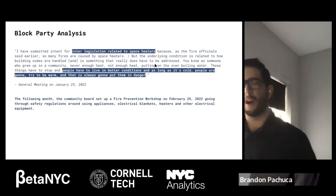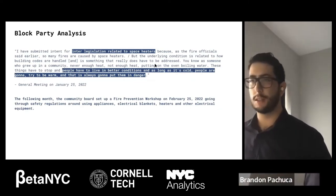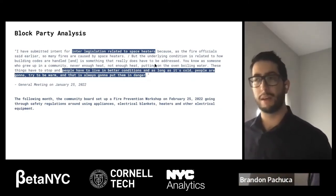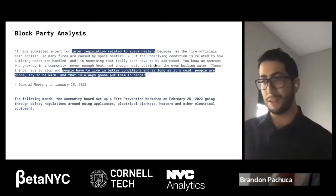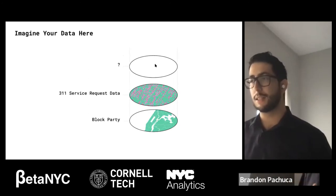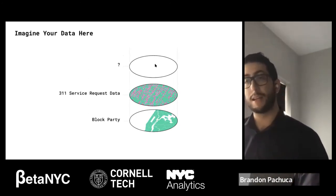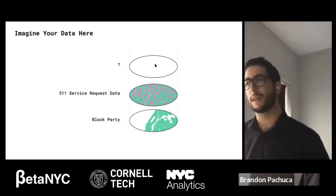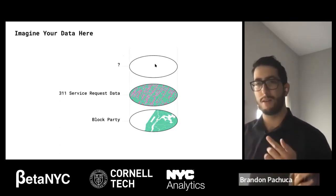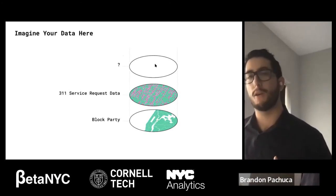The following month, the community board set up a fire prevention workshop on February 22, 2022, going through safety regulations around using appliances, electrical blankets, heaters, and other electrical equipment. This is an example of using 311 service requests to act as a signal to dig through all the noise in the data to pull out a meaningful story and potential explanation for why heat and hot water in particular is being reported so frequently. This analysis took our team member just over an hour using the BlockParty archive, showing the power of that tool.